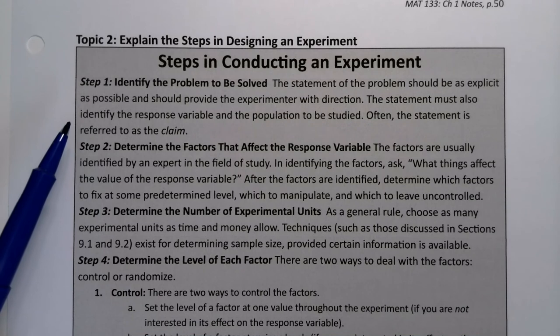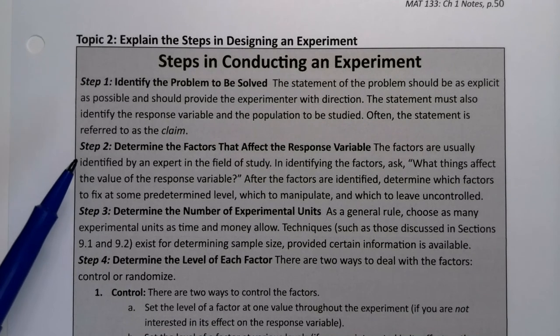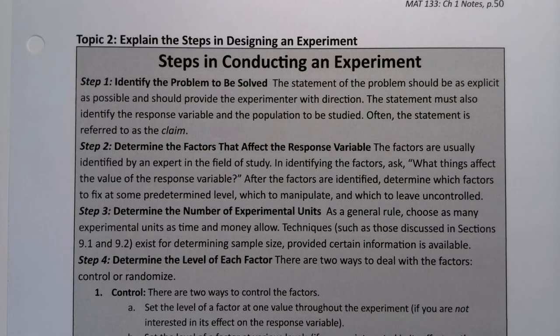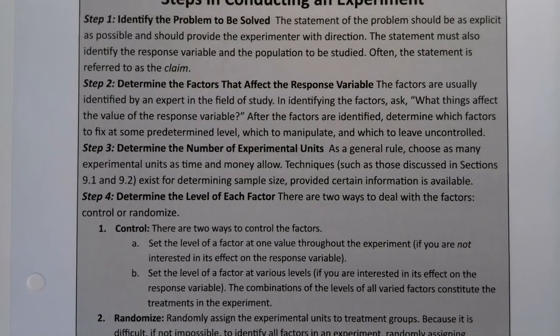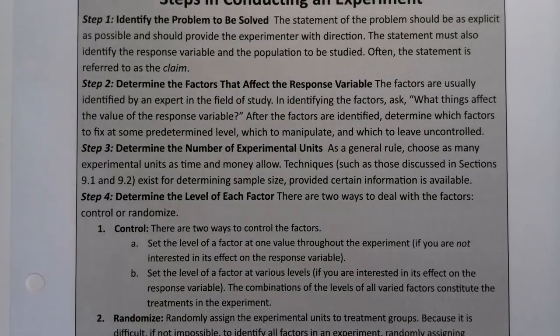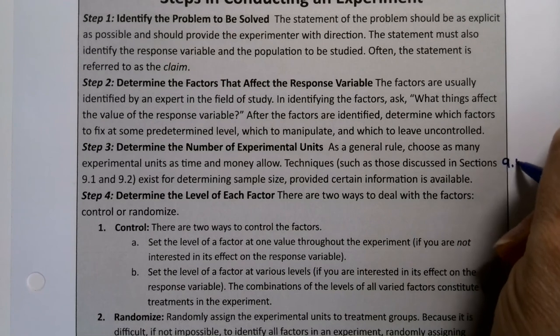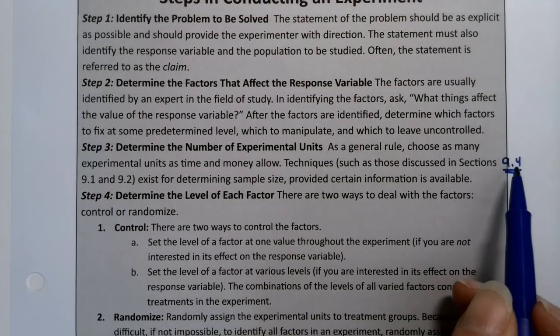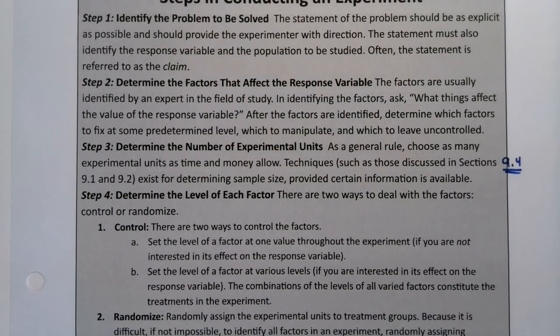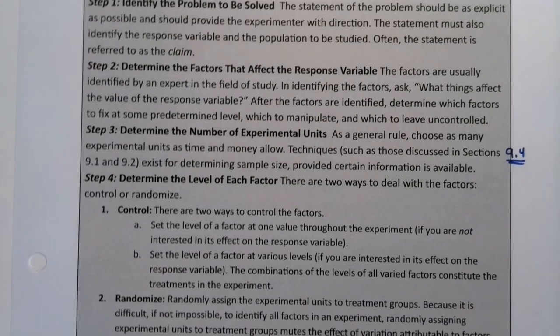We'll talk more about that in a later chapter. You determine the factors that affect that response variable. So what are the things that I think might affect what's going on here, what I think will have an influence. I determine how many experimental units I would want. We'll talk about more that in later chapters, particularly 9.1 and 9.2. It's actually also 9.4 because I actually stole them out of 9.1 and 9.2 and put them into a section called 9.4. So that's where the sample size portions are. But there's a way to figure that out.